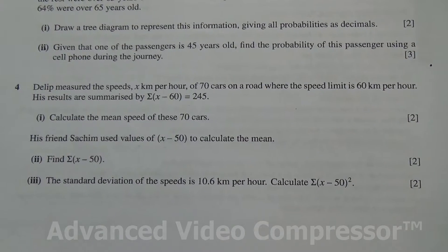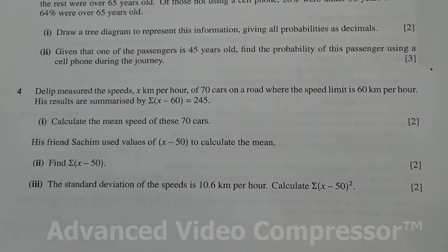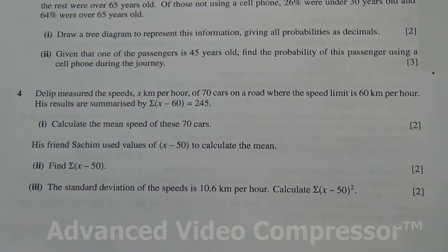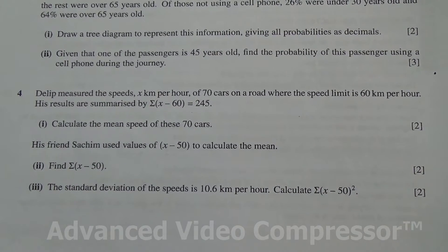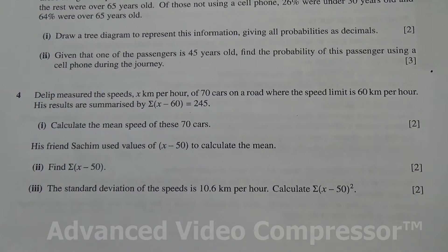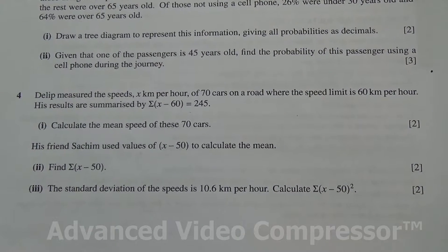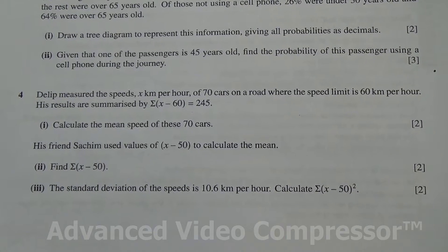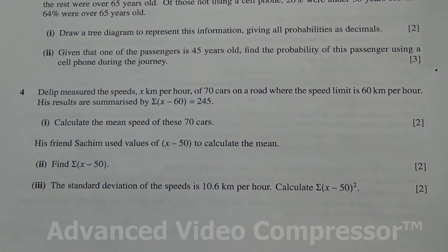Question number 4. Dilip measured the speeds, x kilometers per hour, of 70 cars on a road where the speed limit is 60 kilometers per hour. His results are summarized by the summation of x minus 60 is equal to 245. Calculate the mean speed of these 70 cars.